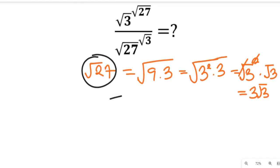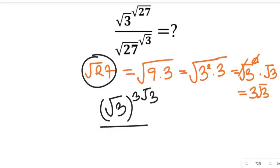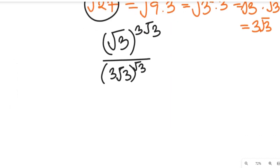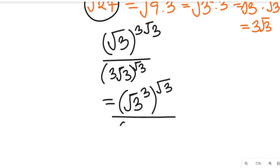So the equation will become: square root of 3 to the power of 3 root 3, divided by 3 root 3, all to the power of square root of 3. If we simplify this further, we can see that the numerator becomes square root of 3 to the power of 3, all to the square root of 3, divided by 3 to the square root of 3, all to the power of square root of 3.